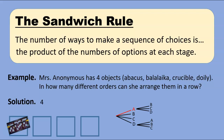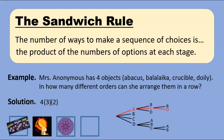I'm not going to draw all the branches on the tree, just enough to suggest what the full tree looks like. Mrs. Anonymous will have three options no matter what, so we multiply four options at the first stage by three at the second. Suppose she chooses the crucible second — now she only has two options remaining, and we multiply by two. Putting the doily in the third slot leaves only one option for the final slot: the balalaika. Hence the sandwich rule tells us the total number of ways to arrange four objects is 4 × 3 × 2 × 1, which is twenty-four.